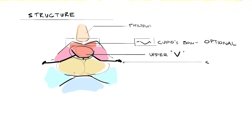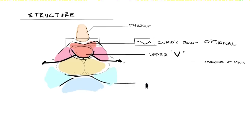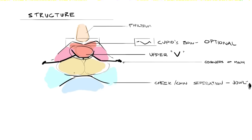Towards the sides, we have the corners of the mouth, which are extremely important to keep in mind. The corners of the mouth contain the deepest pockets of ambient occlusion on a closed mouth. At the bottom of the mouth area, we don't need to focus so much on the bottom lip — it's much more important to focus on the plane change between the cheeks and the chin.